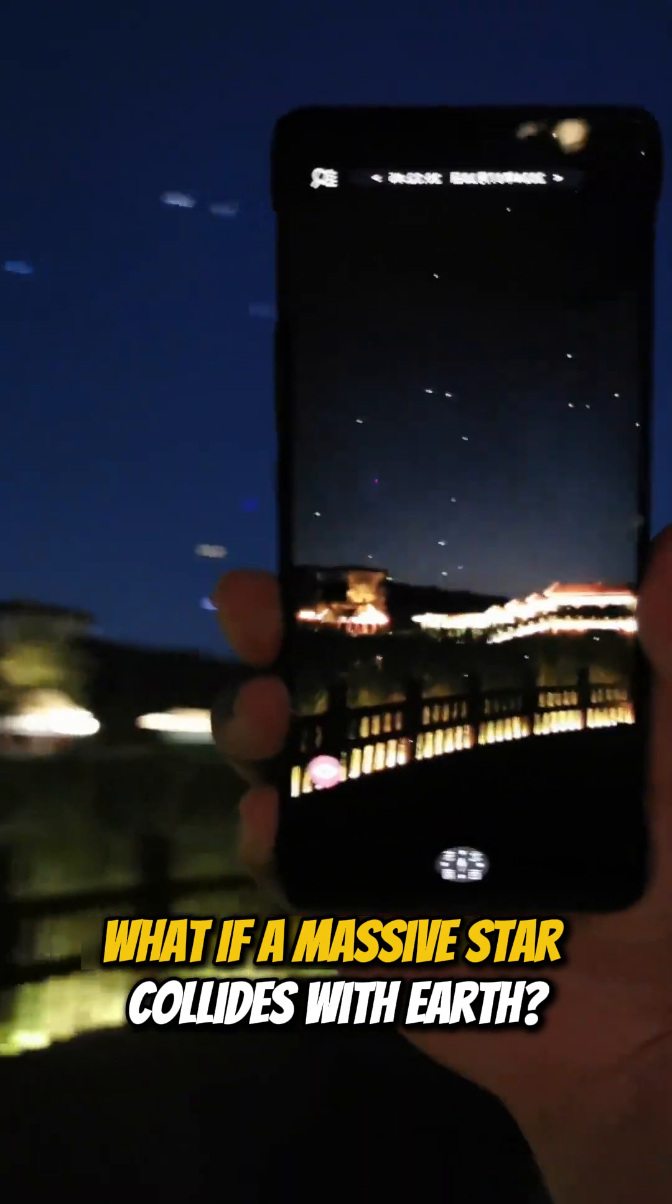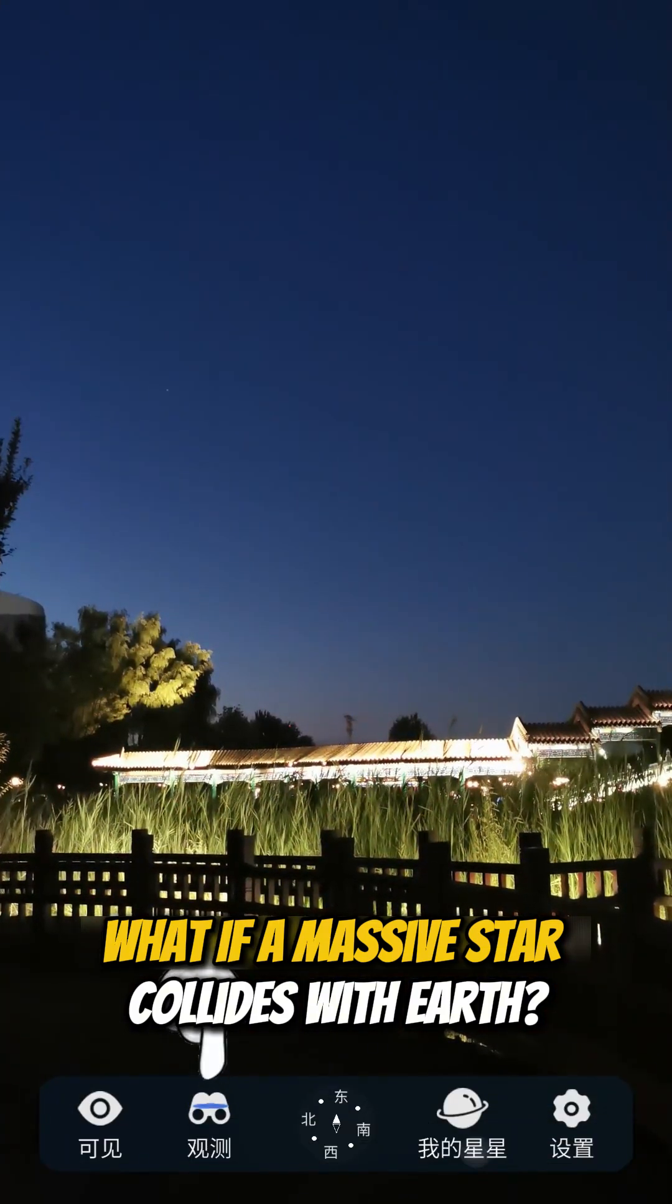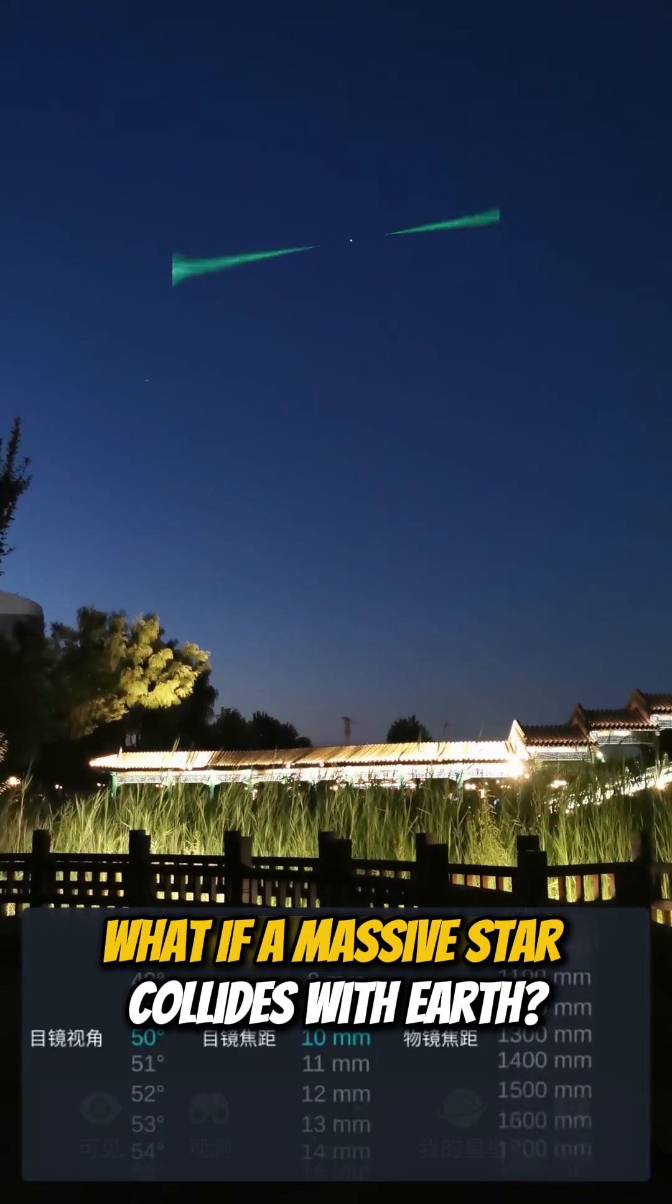Open the Universe Star Map, switch to telescope mode, then adjust the focal length to zoom in. The star has now been clearly shown.